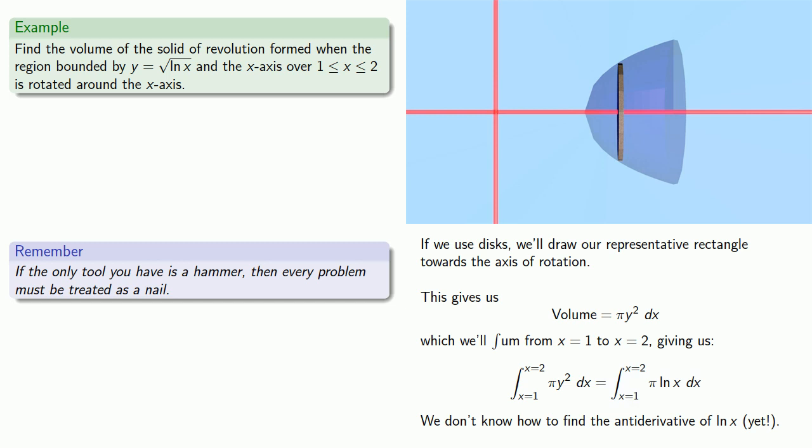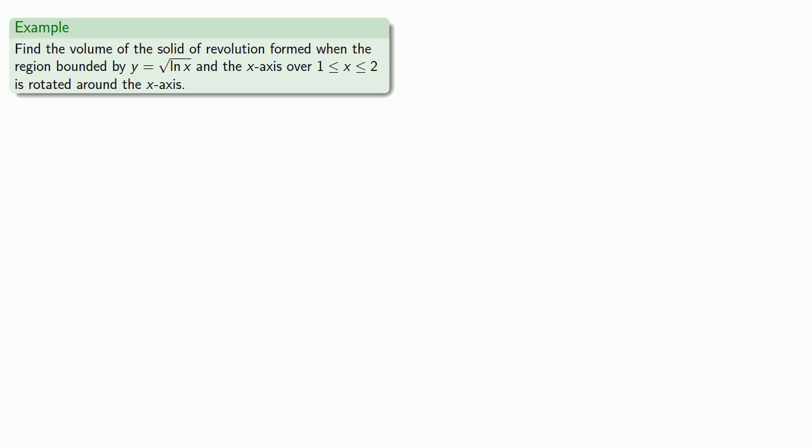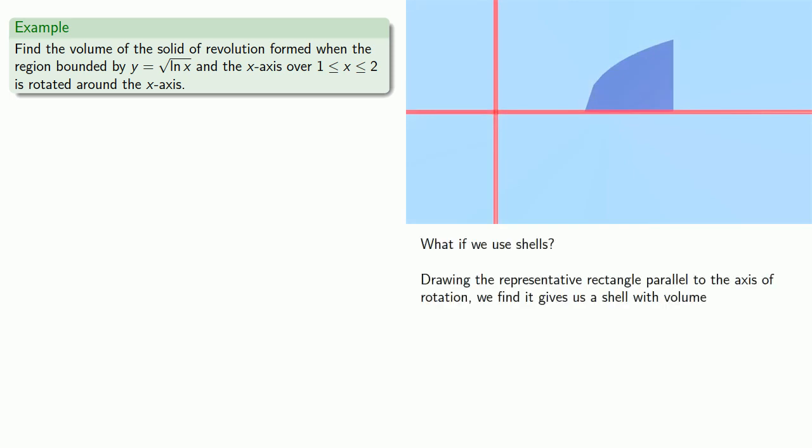Fortunately, we do know a second method of finding volume. So once again we'll graph our region. But this time we'll draw a representative rectangle parallel to the axis of rotation. Now we'll rotate everything around the x-axis. And our representative rectangle becomes a representative wall where the length of the wall is equal to the circumference of a circle with radius y, or 2 pi y.